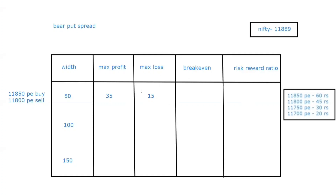The maximum loss is 15, which is the net debit. The width is 50, so 50 minus 15 gives a maximum profit of 35. The break-even is calculated as the higher strike minus the debit: 11,850 minus 15 equals 11,835. The risk-reward ratio is 15 to 35, which comes to approximately 1 to 2.4. So this completes the first spread example, which we have also done in previous modules.